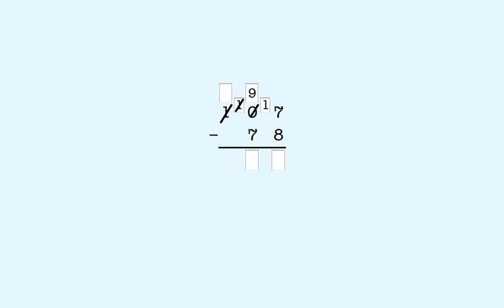In the ones place, we now have 17 minus 8, which is 9. Now the tens place — we have 9 minus 7, which is 2. So we put a 2 in the answer box in the tens place. In the hundreds place, we don't have any hundreds left. That means we're done. The answer is 29.